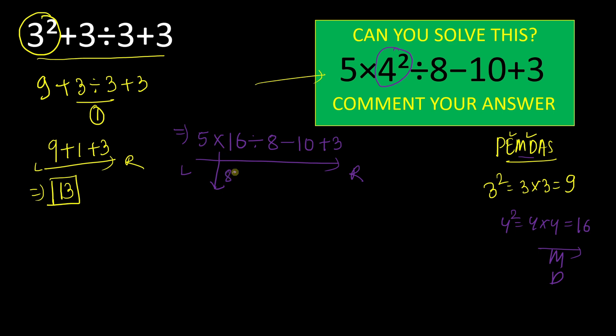So we will write 80 ÷ 8 - 10 + 3. Now we have this division part. 80 ÷ 8 will give result 10 here.